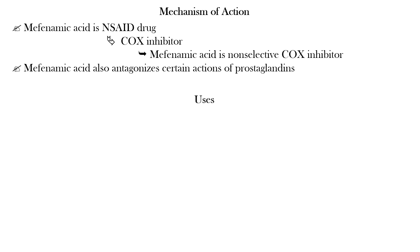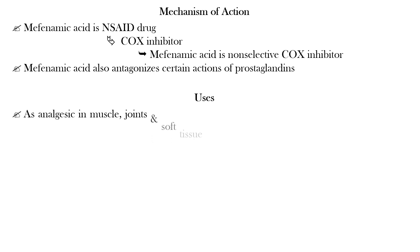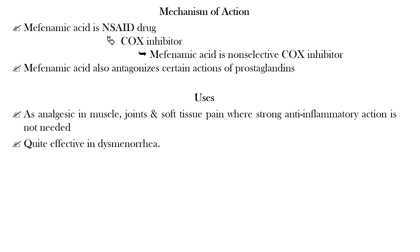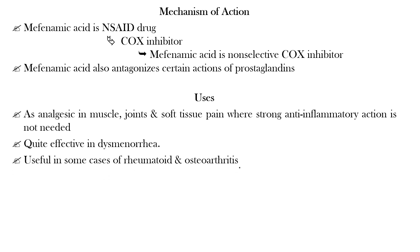Coming to its usage. Mephenamic Acid is indicated as an analgesic in muscle, joint, and soft tissue pain where strong anti-inflammatory action is not needed. It is quite effective in dysmenorrhea and is useful in some cases of rheumatoid and osteoarthritis.